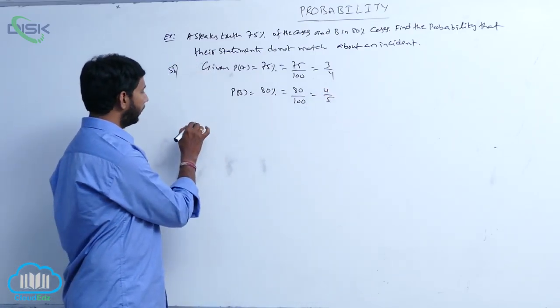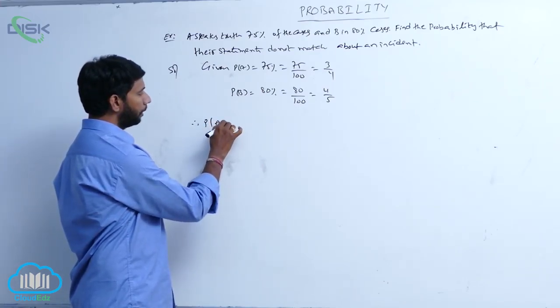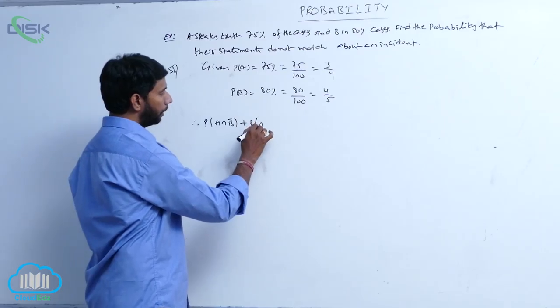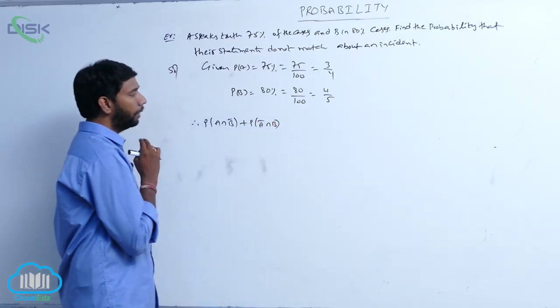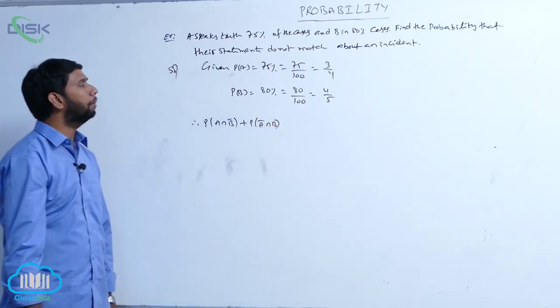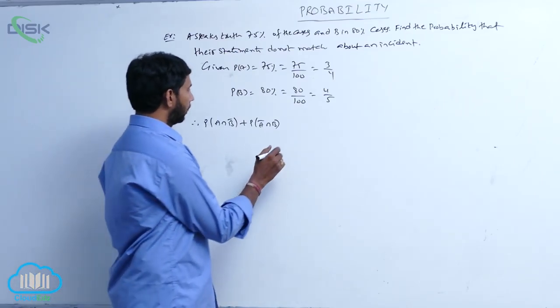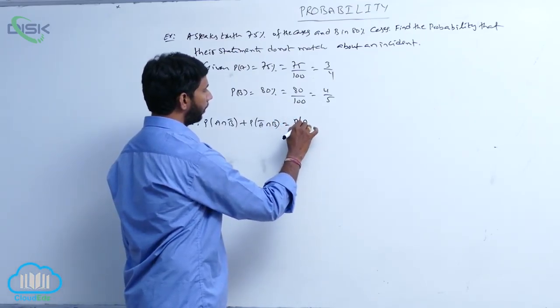The given condition is the statements do not match, that implies P of A intersection B bar plus P of A bar intersection B. Here A and B occur independently, so it is P of A into P of B bar plus P of A bar into P of B.